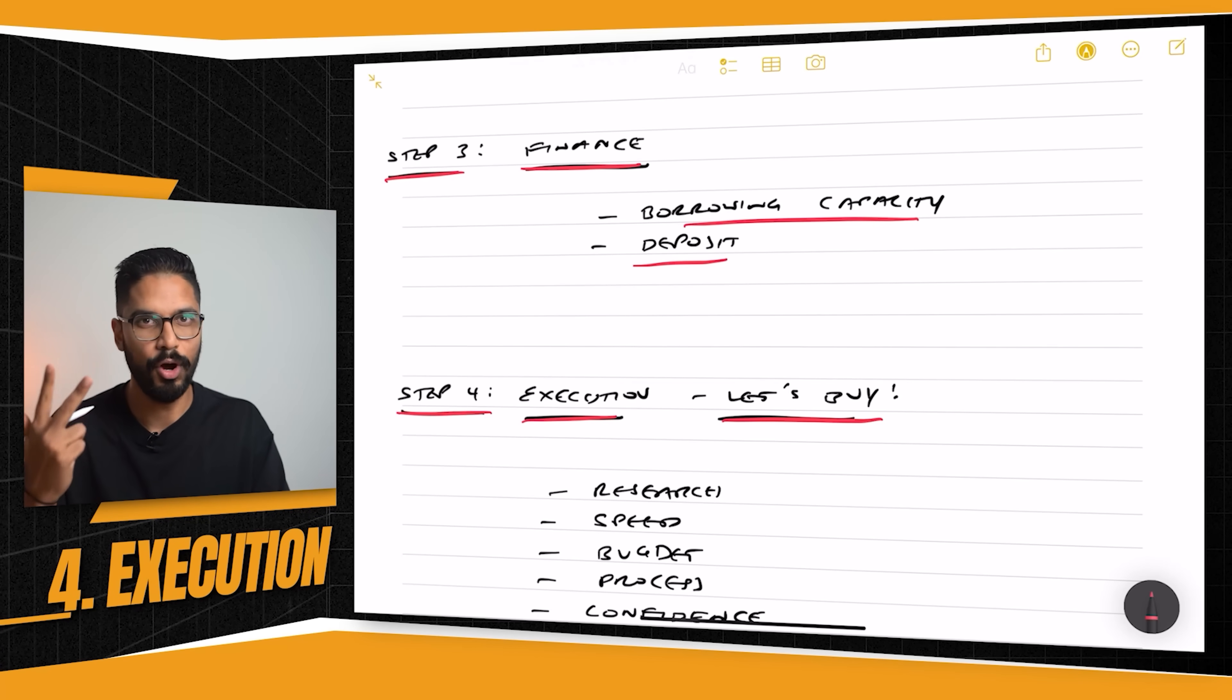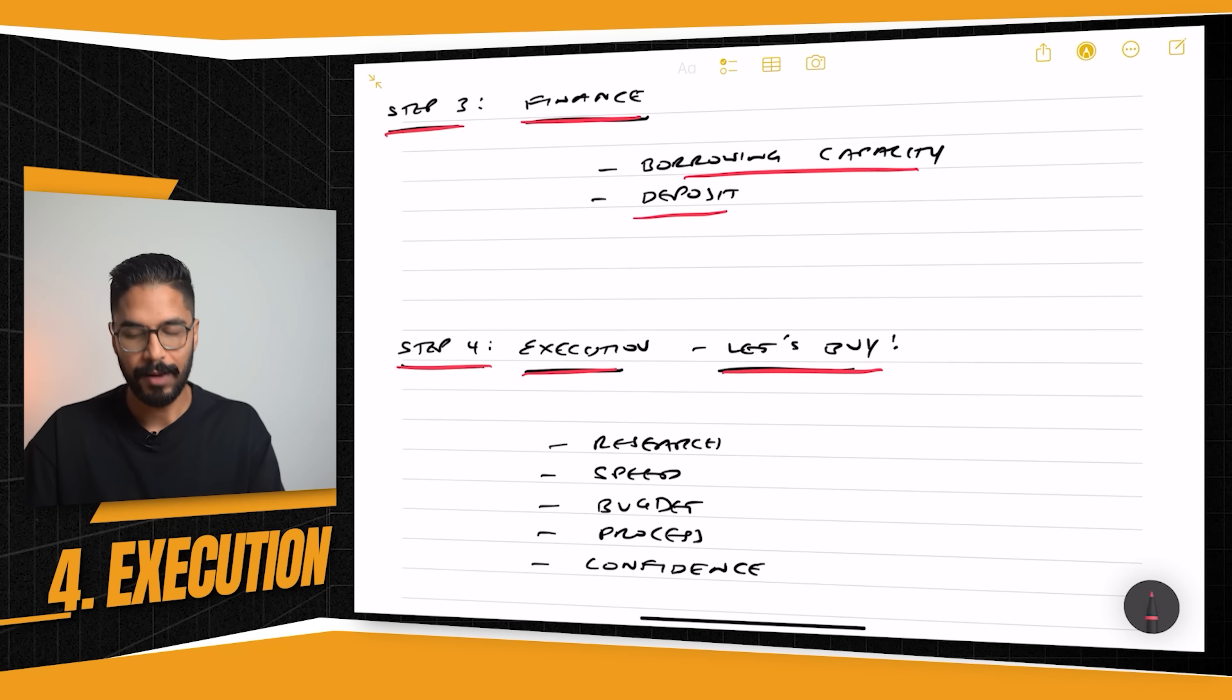That's why you need to really follow and commit to step one to step three. Because if you have your strategy, you know what your acquisition plan is, and you know what the bank is willing to give you, you're going to have very good scope of focus around what you need to target and how you target it. Now, when it comes to execution, there's a couple of things you need to keep in mind.